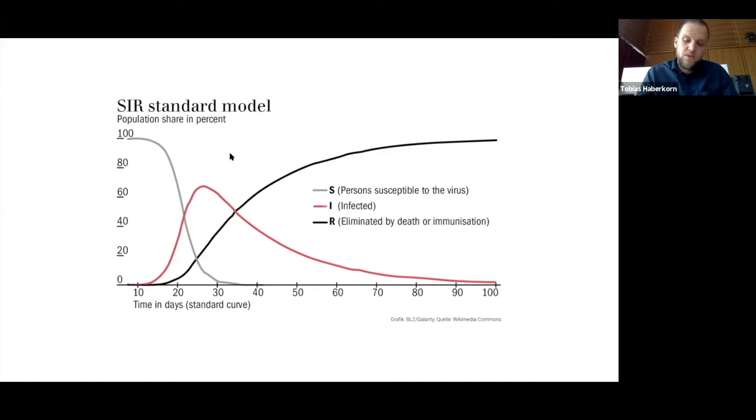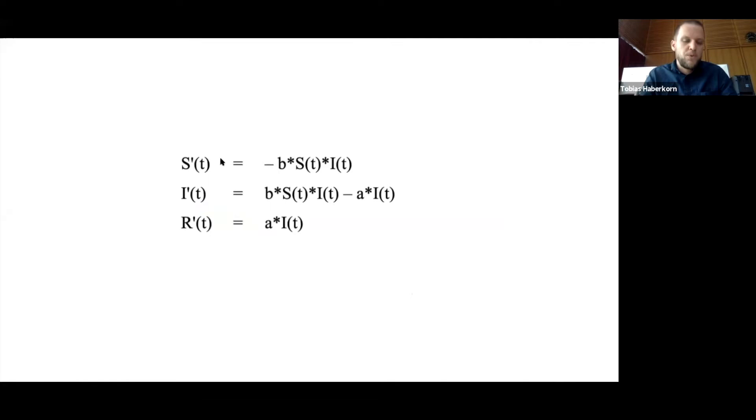I'm going to show you the simplest possible way of writing down these differential equations. You see you have S, I, and R, their derivatives, and you have in addition to that two parameters, a and b. If you know both these parameters, you can actually calculate the number of new infections at any point in time according to the model.